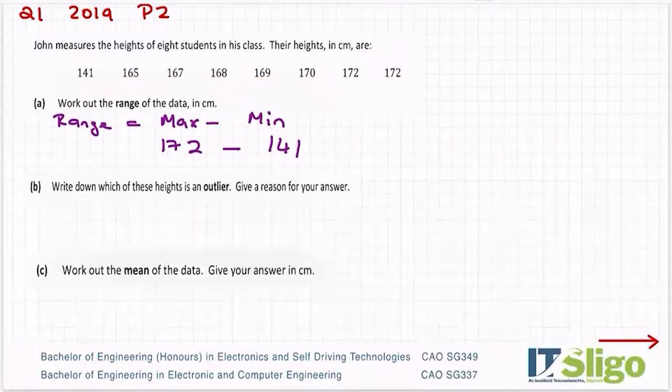So let me take them away. 172 minus 141, and my range or the spread of my data or the difference between max and min is 31. Part B then says write down which of these heights is an outlier. Give a reason for your answer.